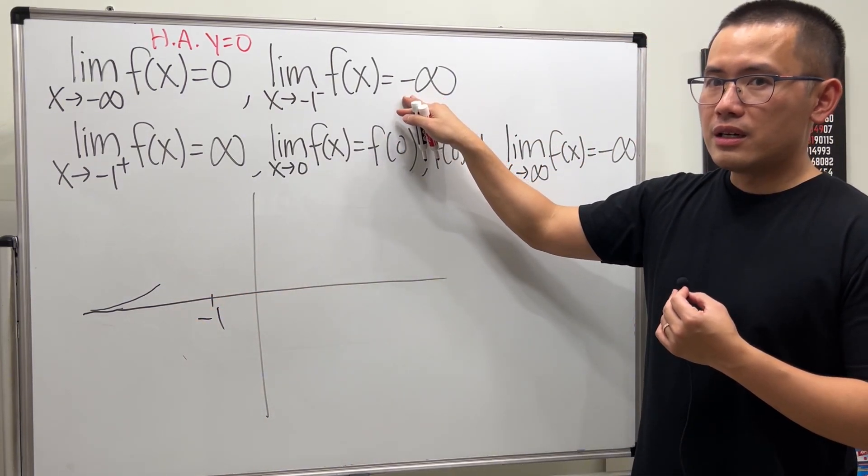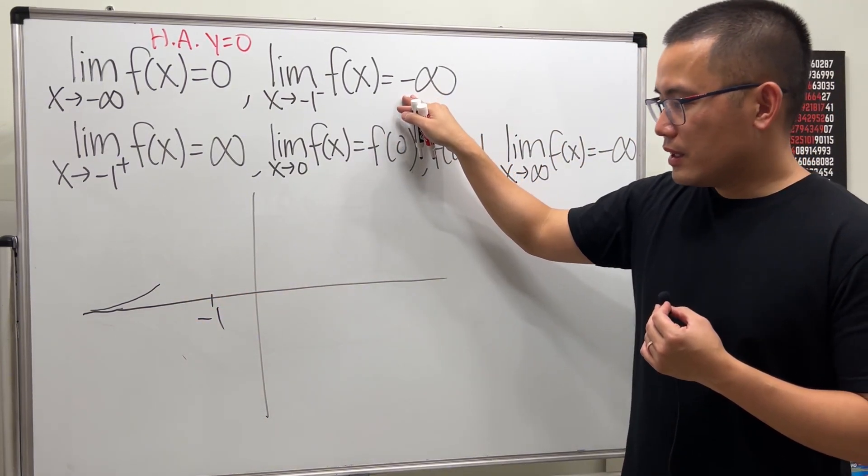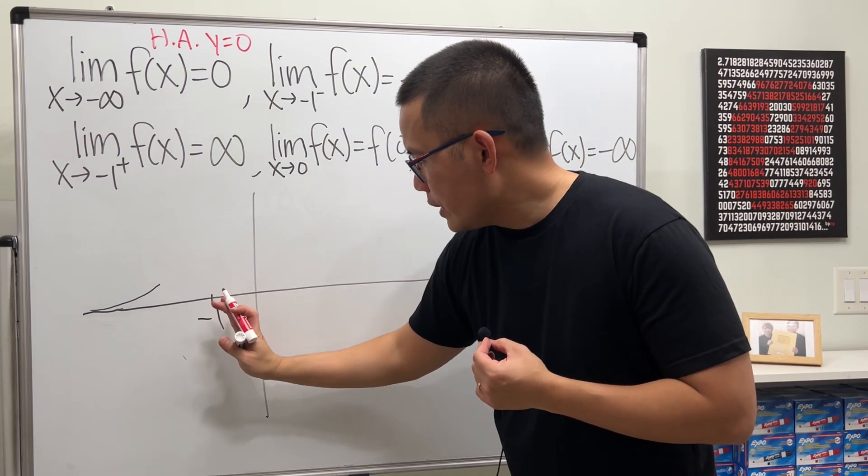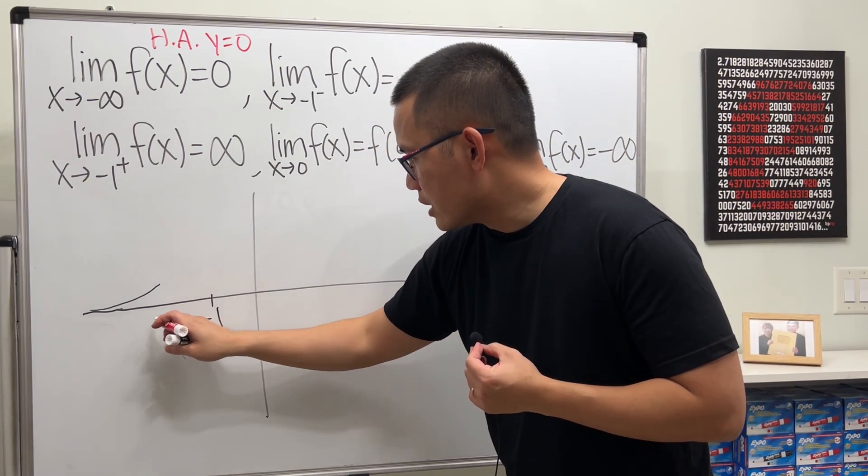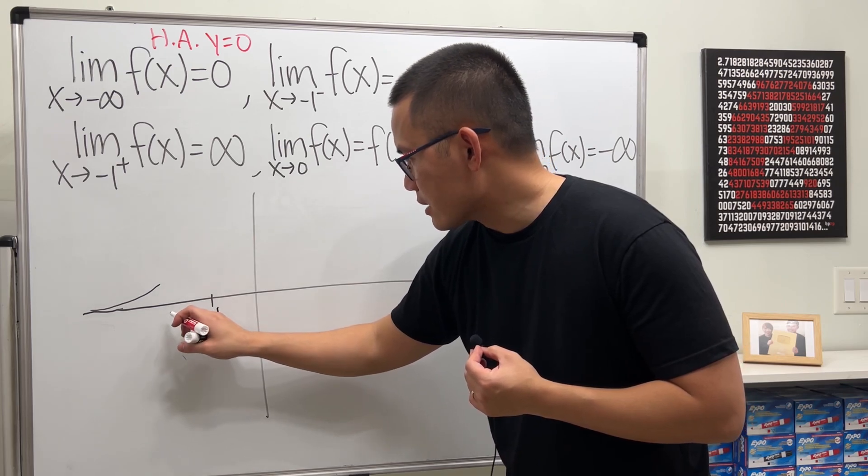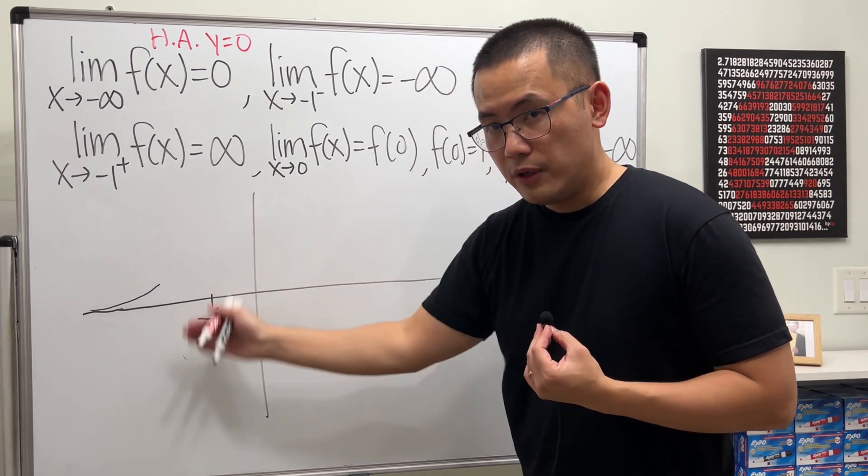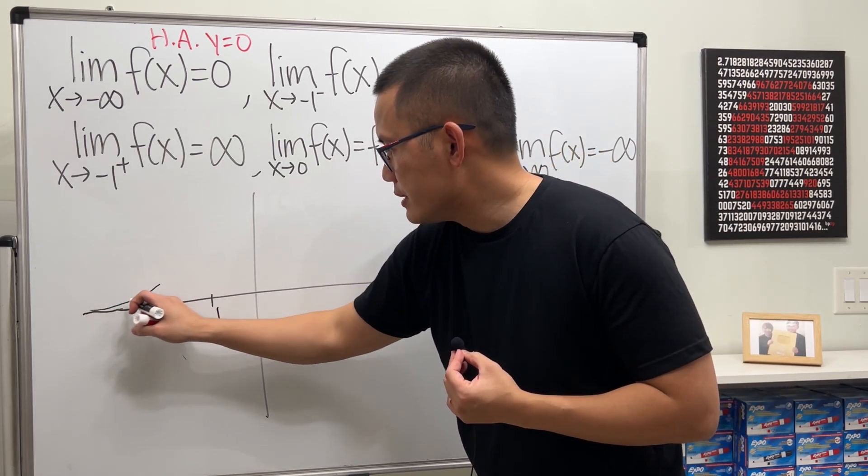This right here is negative infinity. So that means before we hit negative 1, the curve will go straight down. So in fact, the curve will have a vertical asymptote. And since I put this down already, so that means we better somehow come back down like this.